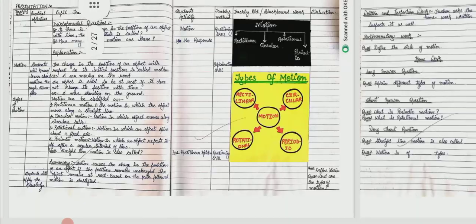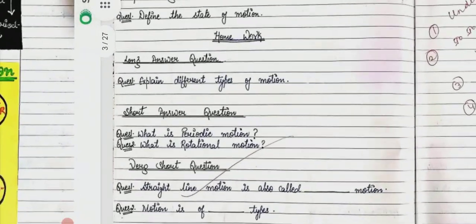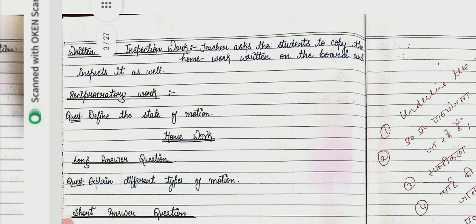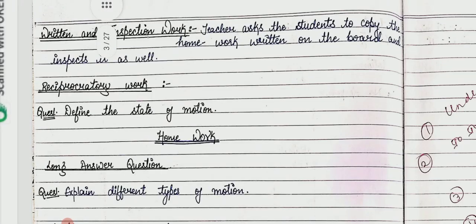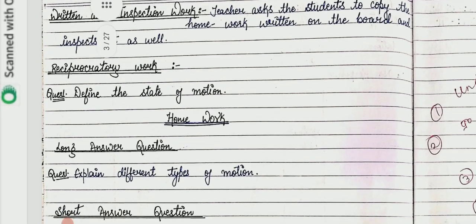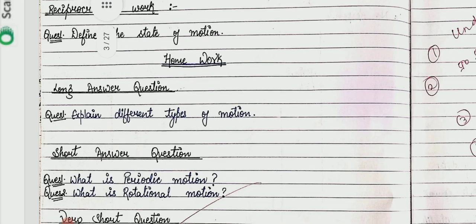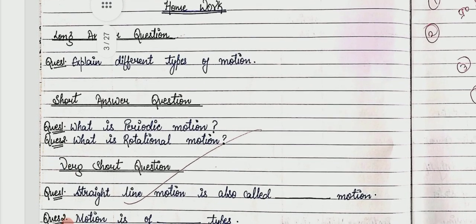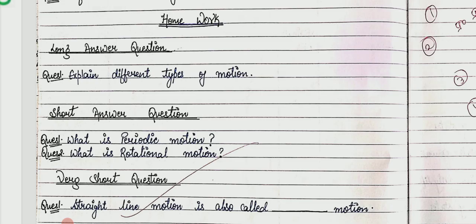After the presentation, written inspection work is done — the teacher asks students to copy the homework written on the board and inspects it as well. We then give homework to students with three types of questions. Long answer type question: explain the different types of motion.